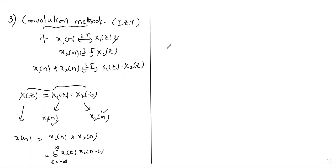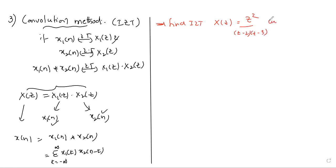Write the problem: find the inverse Z-transform of X of Z equal to Z squared divided by the quantity Z minus 2 times Z minus 3, using the convolution method. Here, the ROC is not mentioned, which means by default we take all sequences as causal sequences.